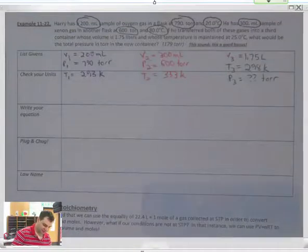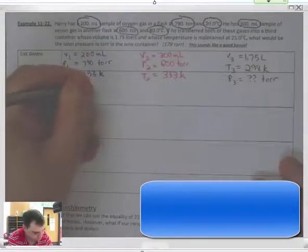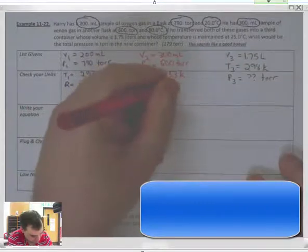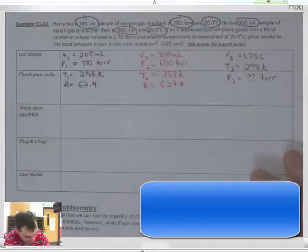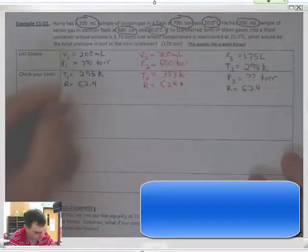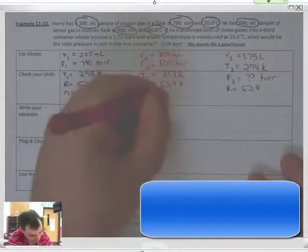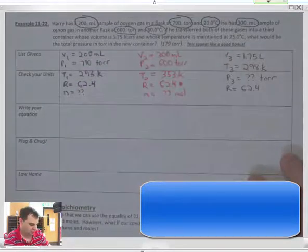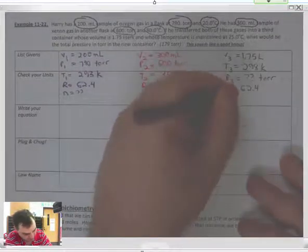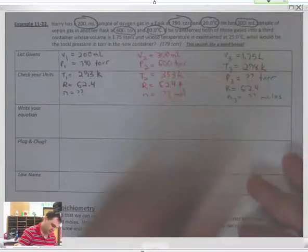So here's how I'm going to do this problem here. Here I'm going to use an R of 62.4 because I have torr. And here I'm going to use an R of 62.4. Each one of these problems I'm going to find the moles. Now this moles and this moles is going to be added together here because these do not react. And that's going to give me the third moles over here. And then I can find the pressure.